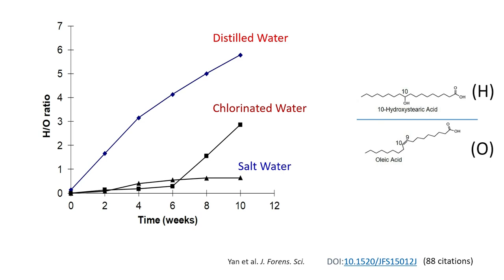This trend was observed in DI water. However, with salt water it's a different story, and chlorinated water also behaves differently. The explanation is that the transition from oleic acid to the other fatty acid — 10-hydroxystearic acid — is due to bacterial action. The amount of bacteria in the water makes a huge difference. For the first time, we were able to come up with a semi-quantitative approach.